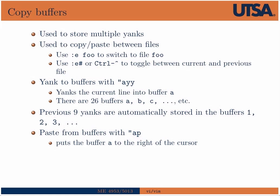We can yank to any named buffer. For instance, to yank three words into buffer B, we would type double-quote B 3YW. Basically any movement commands or operators we've learned can work with named buffers. Also by default, the previous nine yanks are automatically stored in buffers 1 through 4 and so on. We can then paste the buffers using the P command just like before.